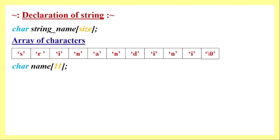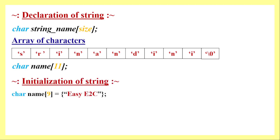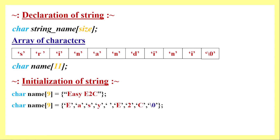So the final size of this particular string will be 11. That is an example of declaring a string. For initialization, the type is 'char', then the name, then the final size including the null character. On the right side of the assignment operator, within curly braces and within double quotes, we mention the string. The total length here is 8, plus one extra byte for the null character, making the final size 9.